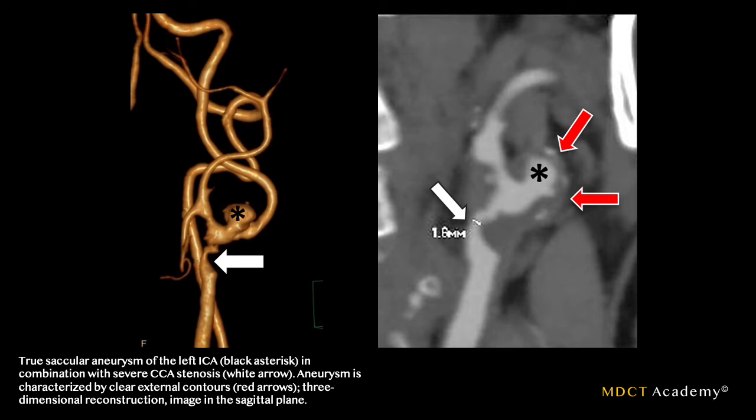This next case also demonstrates a true saccular aneurysm of the left internal carotid artery in combination with severe carotid artery stenosis, shown by the white arrow. The aneurysm is characterized by clear external contours shown by the red arrow and 3D reconstruction in the sagittal MPR. You can also have pre-stenotic and post-stenotic dilation, which further characterizes this finding.